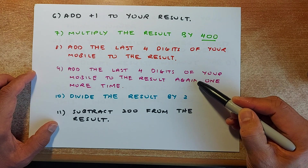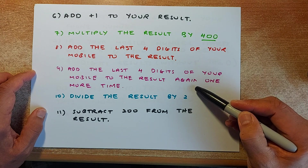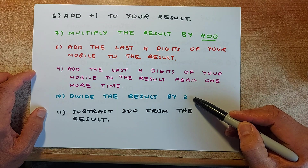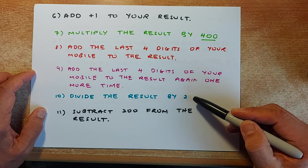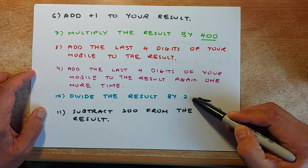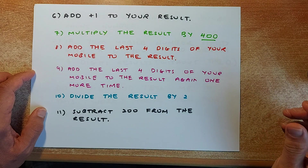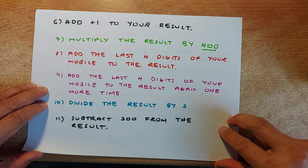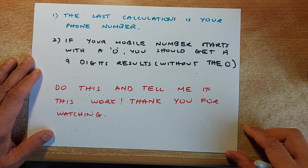Last 2 steps and then we will get your result. Make sure you have the equals sign after each step. Divide that result by 2, then the last step: minus 200 from the result. Press the equals sign and that will give you your phone number — the last calculation is going to be your phone number.